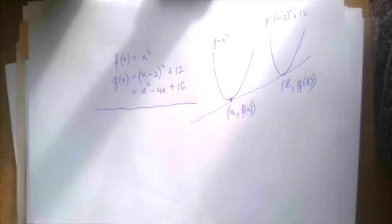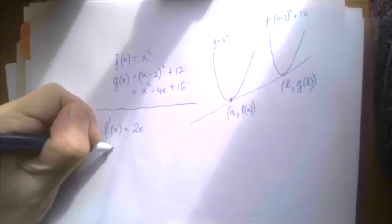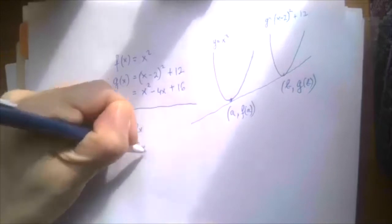Let's see. We differentiate both functions. f prime of x is 2x and g prime of x is 2x minus 4.